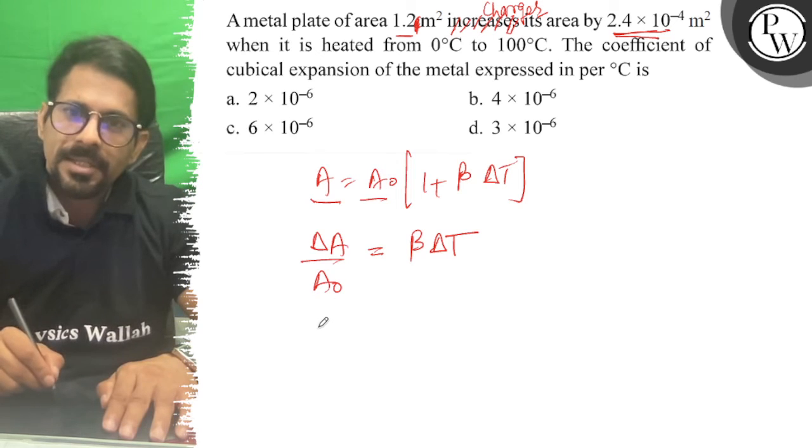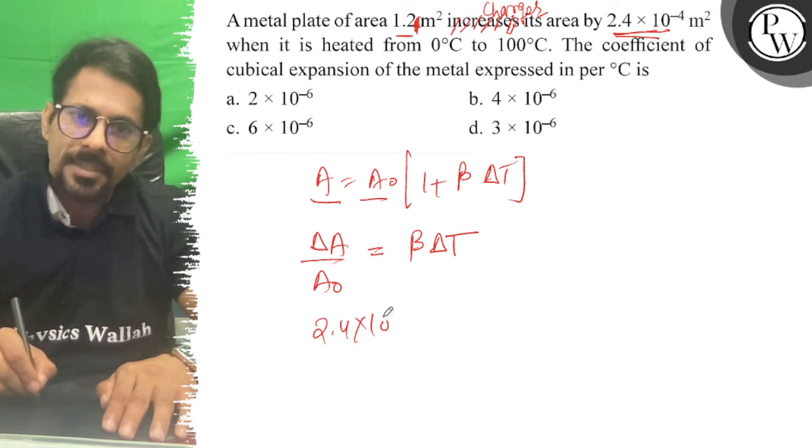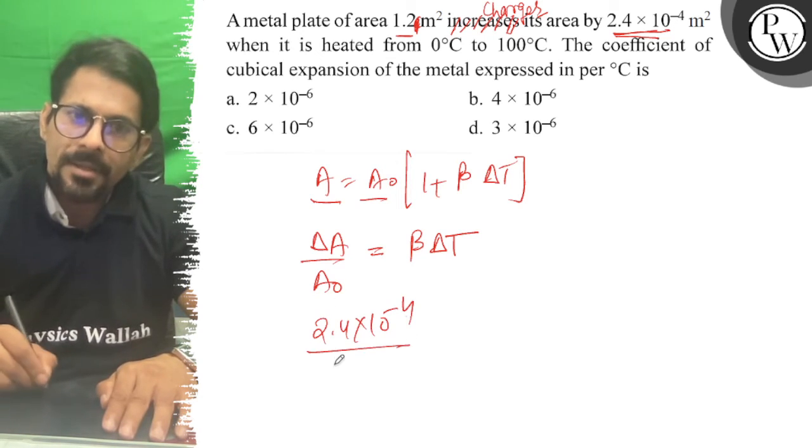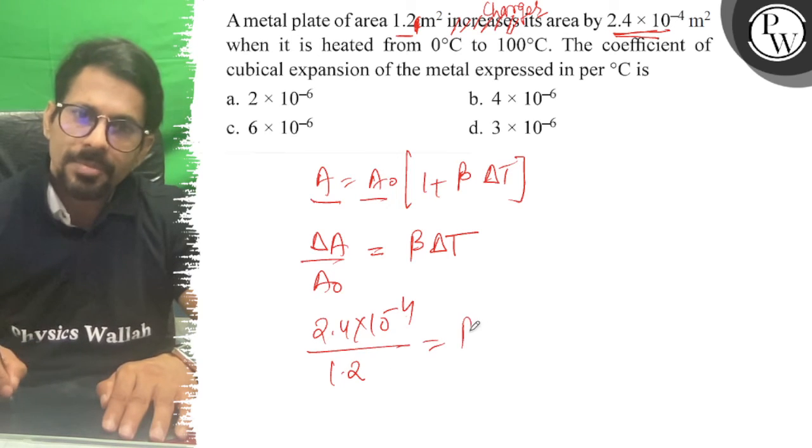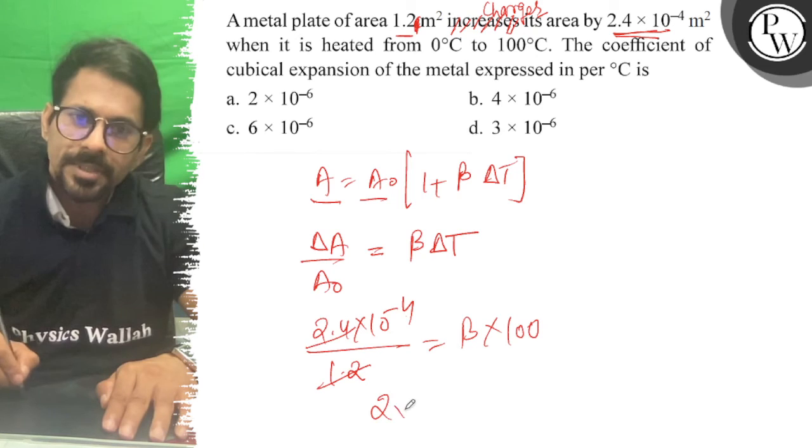So ΔA by A₀: we have ΔA = 2.4×10⁻⁴ divided by 1.2, which equals β times 100. So β equals 2×10⁻⁶.